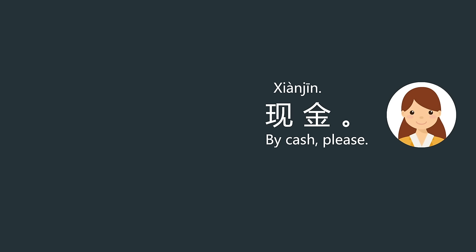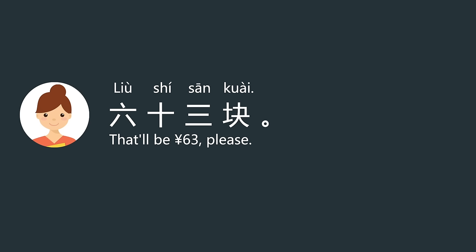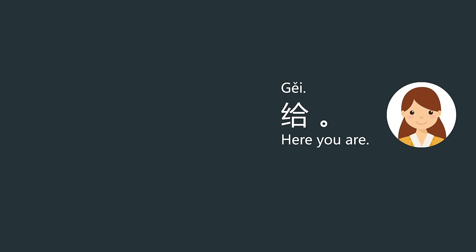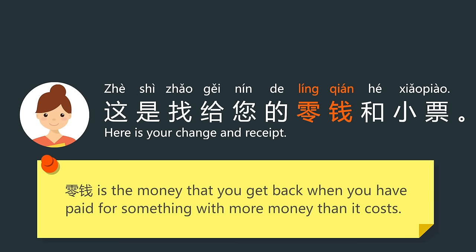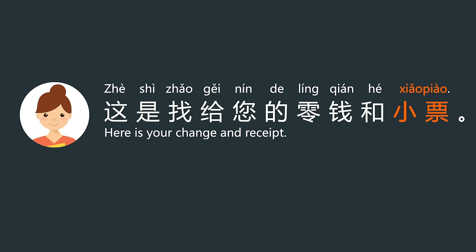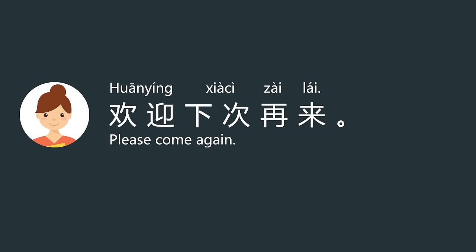现金. 63块. 给. 这是找给您的 — here is your change. 零钱和小票. 零钱 is the money you get back when you have paid with more money than the cost. 小票 means receipt. 欢迎下次再来 — welcome back next time.